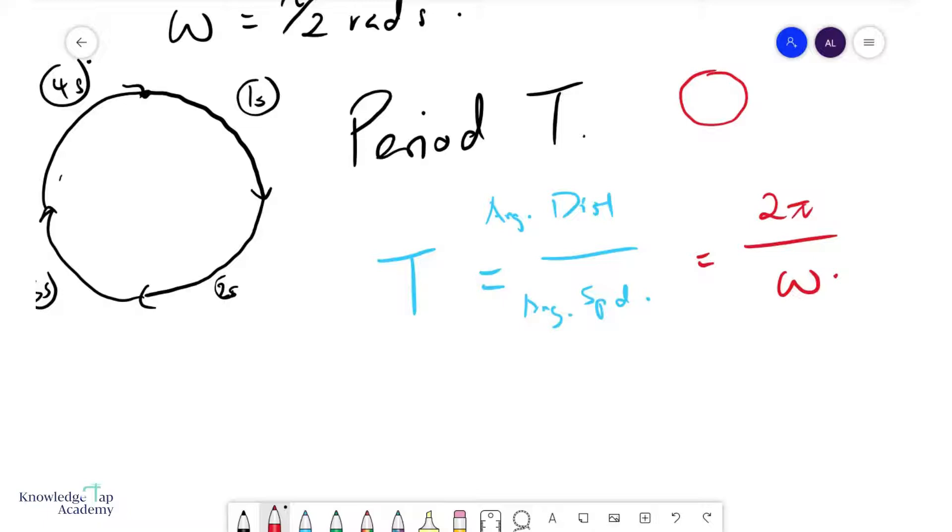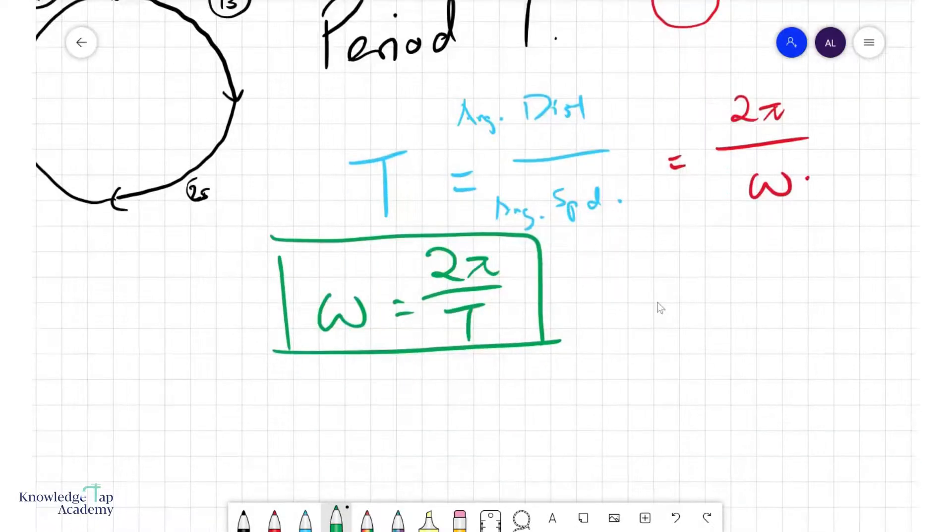And so we have our first, well, I don't want to call it a formula, but I guess you could think of it that way. Omega equals 2π over T. And this is always true as long as you move with a constant angular velocity.